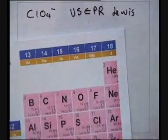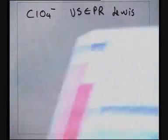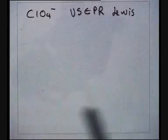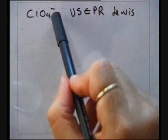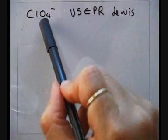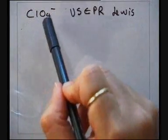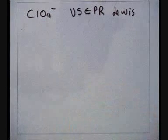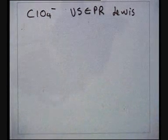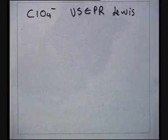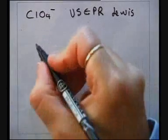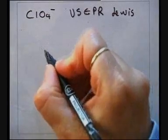The perchlorate ion has got an extra electron. This extra electron is accommodated on the atom that is more electronegative, and therefore one of the Oxygen atoms will have seven electrons and the other three Oxygen atoms will have six valence electrons.